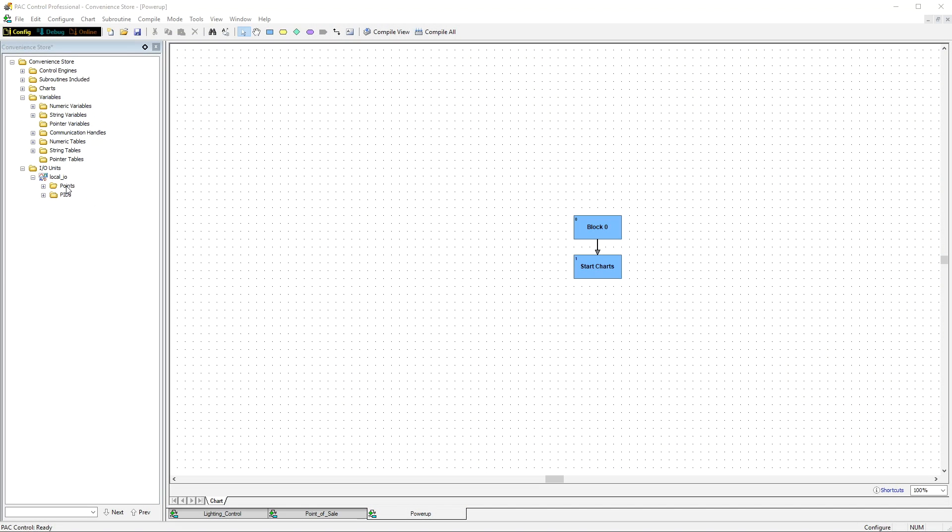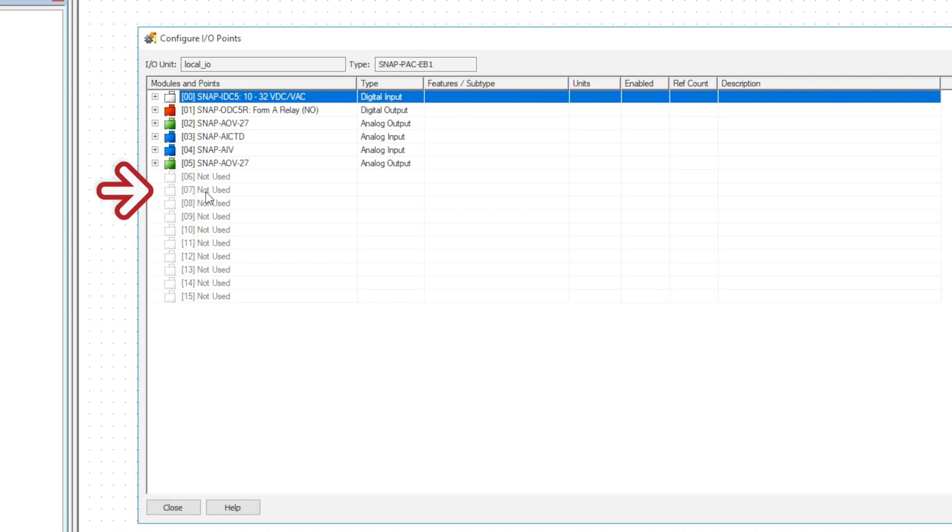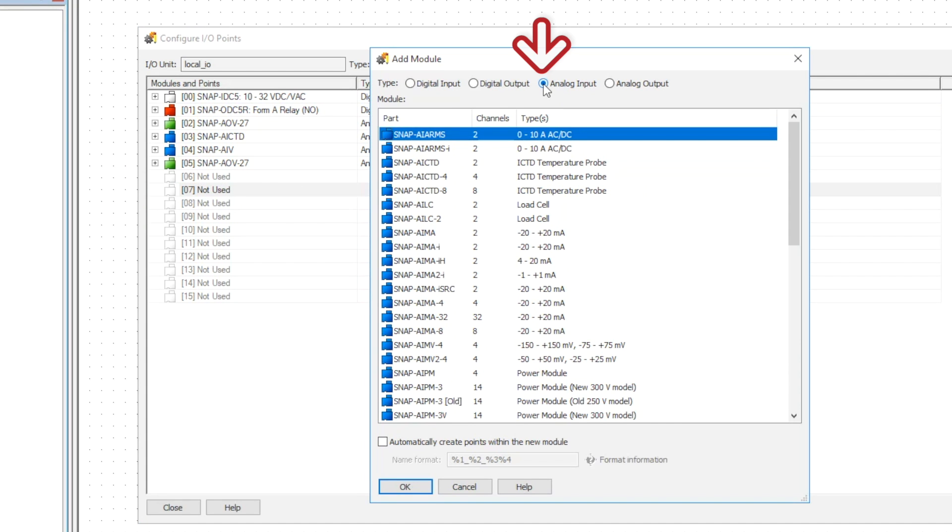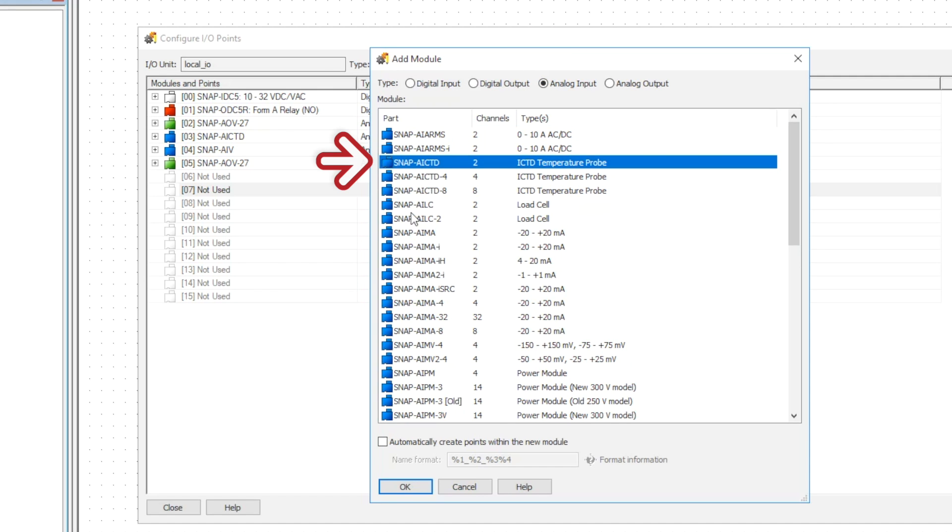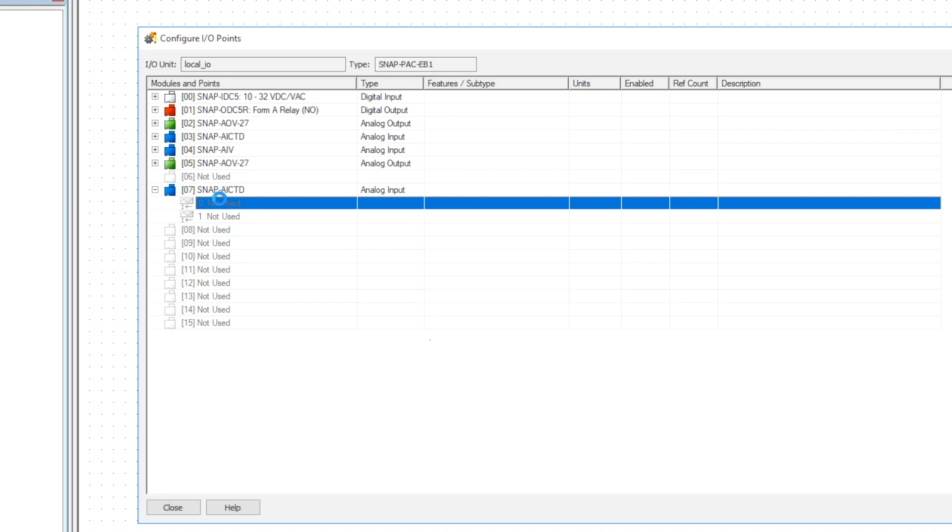Here we are in PAC control, and we've already got our rack configured, so now let's double-click on the empty slot in position seven and we're going to add an analog input temperature module. In this case it's a SNAP-AICTD, and we're going to double-click on the first point on the module to open the point configuration dialog.